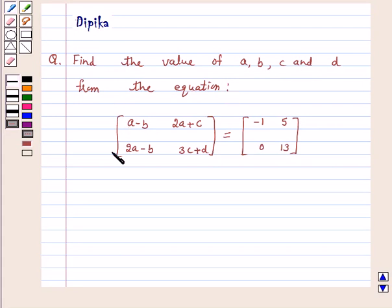A 2 by 2 matrix whose elements are A minus B, 2A plus C, 2A minus B, 3C plus D is equal to another matrix whose elements are minus 1, 5, 0, 13.